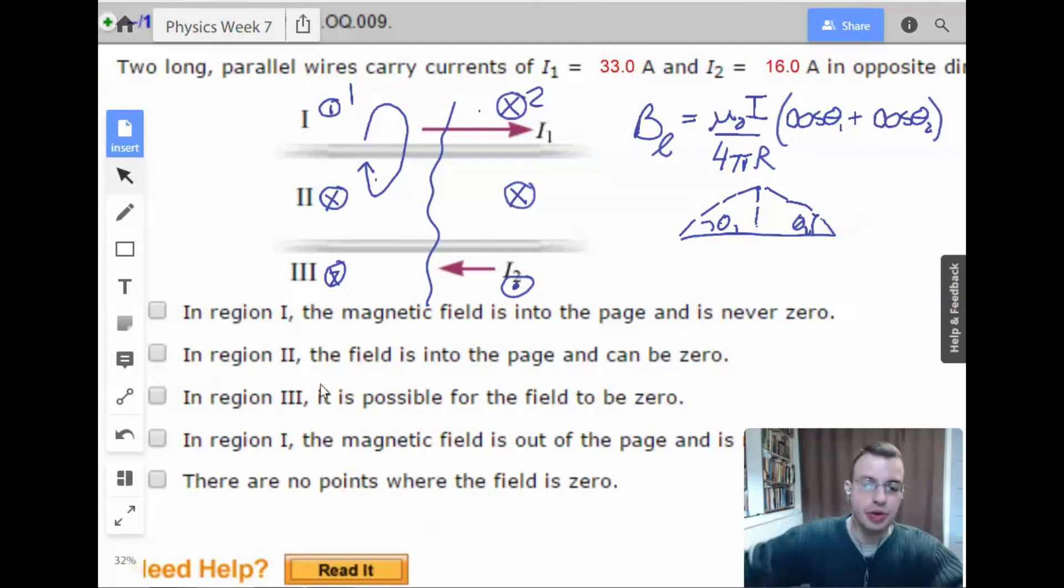In region two, the field is into the page, true, and can be zero. It's into the page, but it cannot be zero. Because I1 is producing some field. I2 is producing some field. They're both into the page. And so we have a positive number greater than zero, and we add another number that's also greater than zero. You aren't going to get zero. So no, the second part, also false.